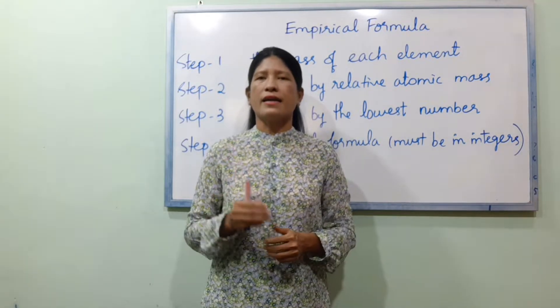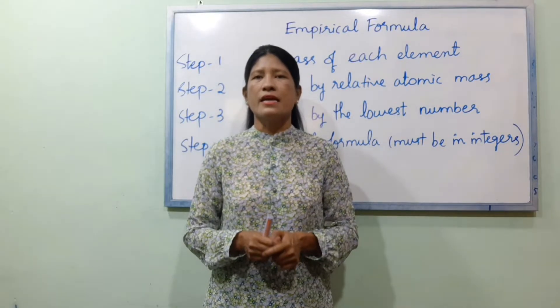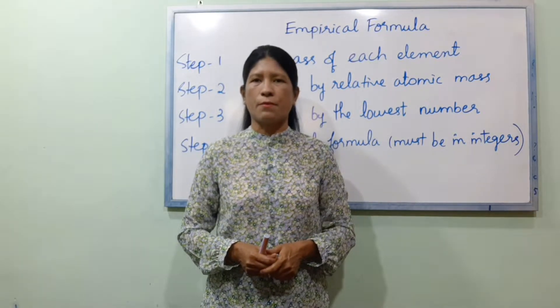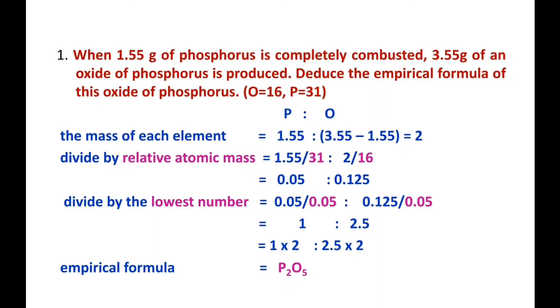Let's take this example to explain. Example 1: When 1.55 grams of phosphorus is completely combusted, 3.55 grams of phosphorus oxide is produced. Deduce the empirical formula of this oxide of phosphorus.